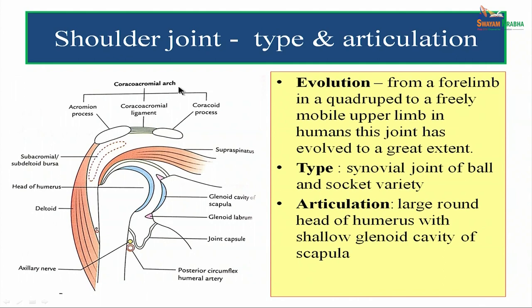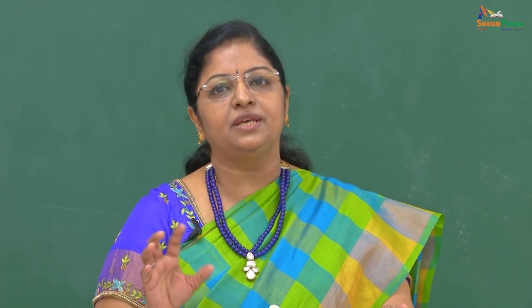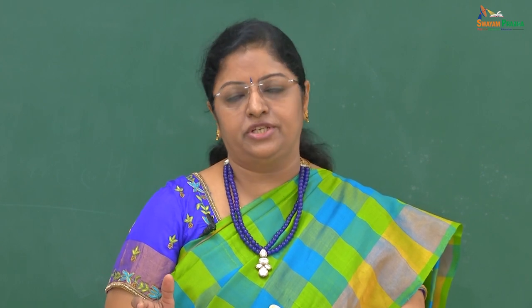Before going on to the main topic, let's see how it has evolved from animals to mankind. The shoulder joint was a forelimb in quadrupeds, and it has evolved by undergoing large modifications in the process of evolution to become a very freely movable joint in the upper limb. Type: it is a synovial joint of the ball and socket variety, lined by synovial membrane and covered by a fibrous capsule, making it freely mobile.